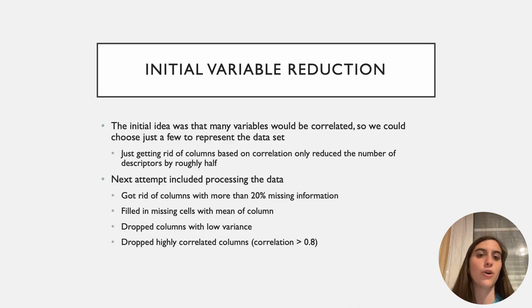Our initial solution was to compare the R-squared values for all of the columns to each other. Hopefully, we would find enough columns were correlated that we could drop down the number of columns to a more manageable amount and choose a few representatives from that. But using this method only reduced the number of our descriptors by half, which was still well over 600 descriptors.